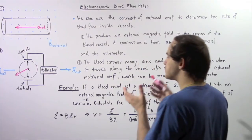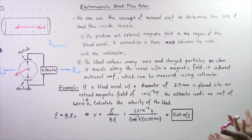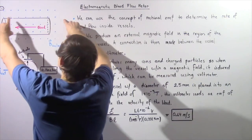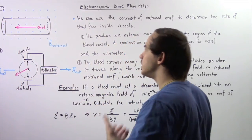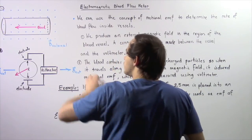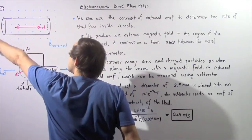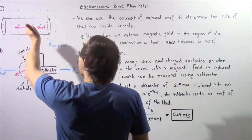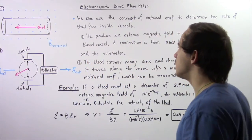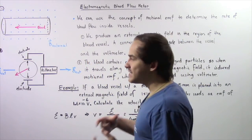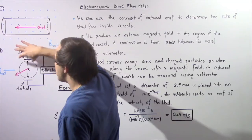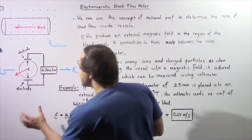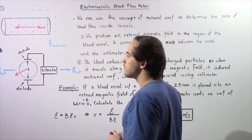Let's look at the two steps we must take to create our Electromagnetic Blood Flow Meter. First, we take our blood vessel and place it into a region that has an external magnetic field given by B. The blood is moving in one direction and the magnetic field points out of the board, as shown by the blue lines. Next, we take two electrodes and place one on the top portion of the blood vessel and the other on the bottom portion.